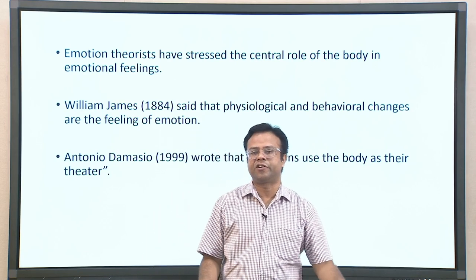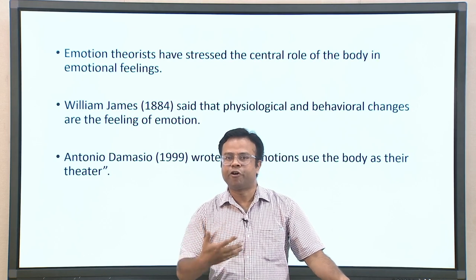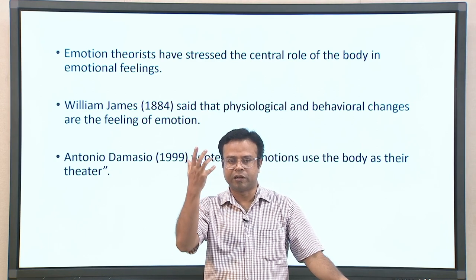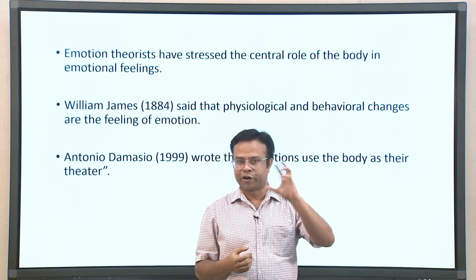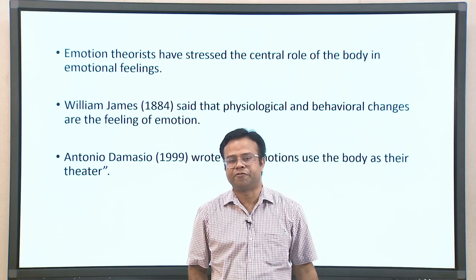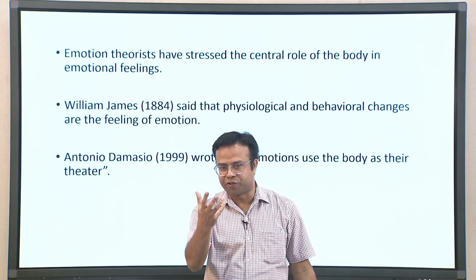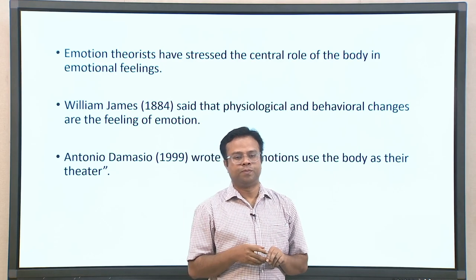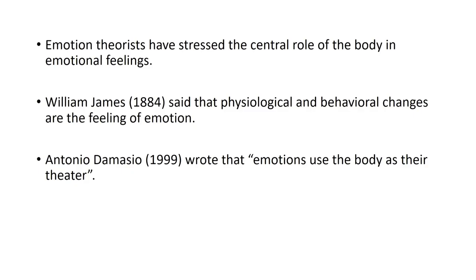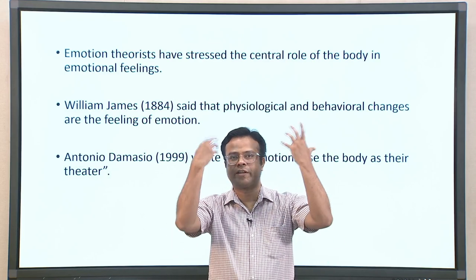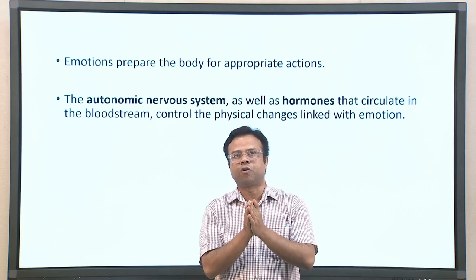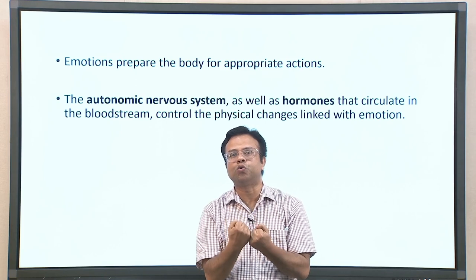Emotion theorists have stressed the central role of the body in emotional feeling. William James, one of the first emotion theorists, said that physiological and behavioral changes are the feelings of emotions — he defined emotions based on those changes alone. Another researcher, Damasio, wrote that emotion uses the body as the theater; the body is the foundation where expression of emotion happens. Emotions prepare the body for appropriate action.